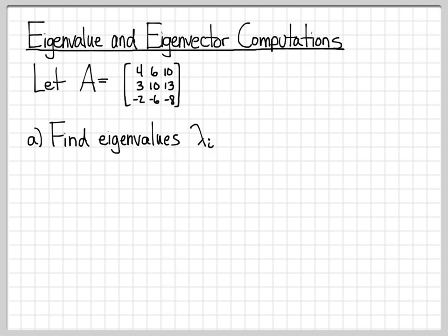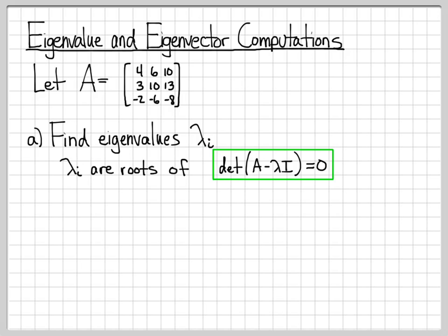Since we're working with a 3×3 matrix, we will have eigenvalues lambda 1, lambda 2, and lambda 3. The lambda i's are the roots of what we call the characteristic equation of the matrix, which is the determinant of A minus lambda times I equals 0. This equation can be used for any n×n matrix — this is the general equation you need to solve.